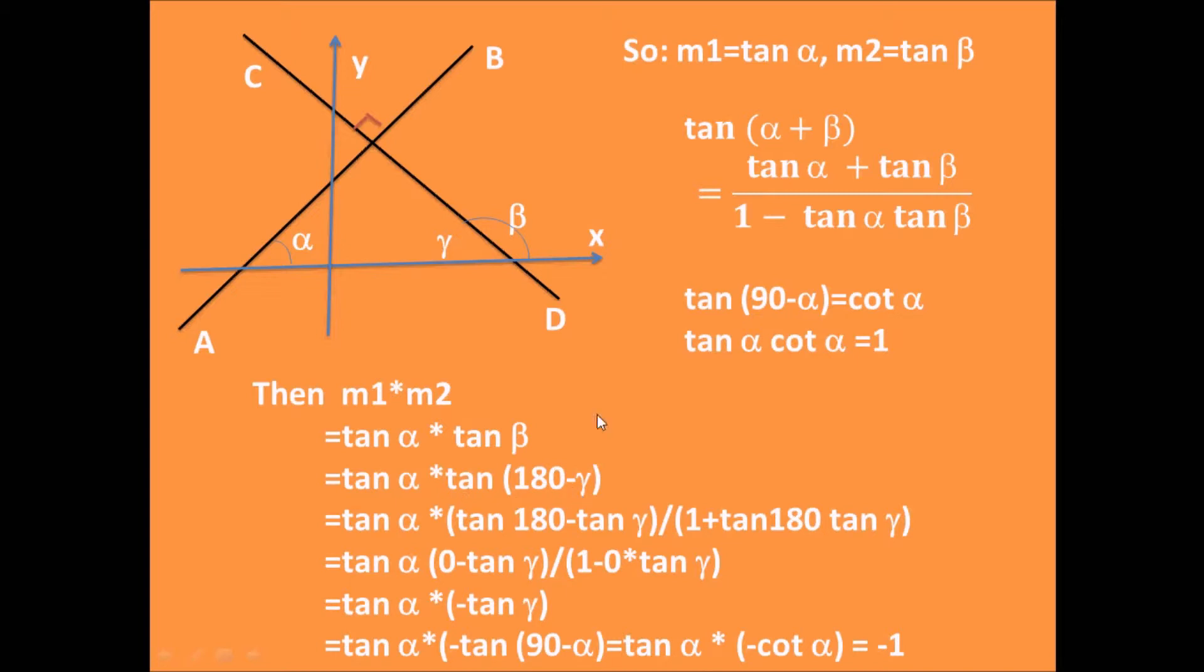For this term, we will use tangent (α + β), this formula. So, we get m1 times m2 equals tangent α times tangent (180 - tangent γ) divided by 1 plus tangent 180 times tangent γ. As we know tangent 180 equals 0, so we get m1 times m2 equals tangent α times (0 - tangent γ) divided by 1 minus 0 times tangent γ equals tangent α times minus tangent γ.